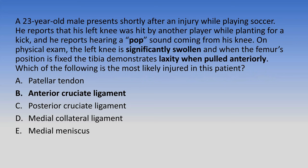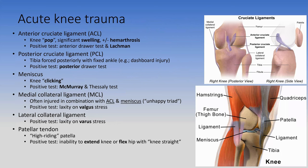The answer is the anterior cruciate ligament. The big hints are the pop sound, significant swelling, and the classic exam finding. The ACL runs from the posterior end of the femur to the anterior part of the tibia. When you tear it, the tibia slides forward because the ACL was holding it posteriorly. Once torn, it allows anterior laxity. Since the ACL and PCL are inside the joint capsule, rupture causes significant swelling and hemarthrosis.